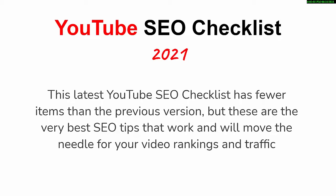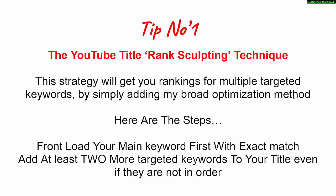This latest version of the YouTube SEO checklist actually has fewer items than the previous version, but these are the very best SEO tips that actually work and will move the needle for your video rankings and get you more traffic on YouTube. So tip number one: the YouTube title rank sculpting technique. This strategy will get you rankings for multiple targeted keywords by simply adding my broad optimization method.